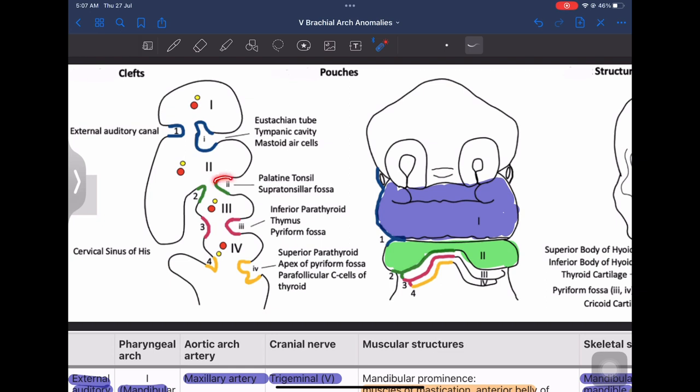Now the second pouch forms the palatine tonsil and the supratonsillar fossa. The third pouch forms the inferior parathyroid glands, the thymus and the piriform fossa. The fourth pouch forms the superior parathyroid gland, the apex of piriform fossa and the parafollicular C cells or the ultimobranchial body which further form the parafollicular cells.